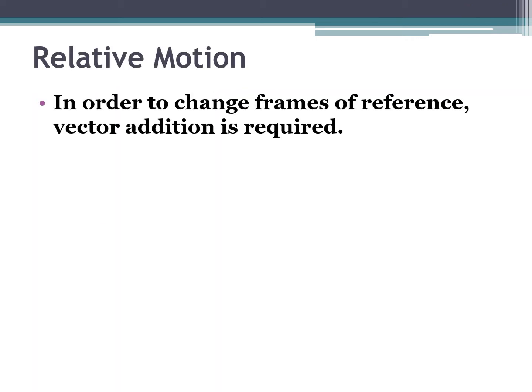When talking about relative motion, in order to change frames of reference — from a motion relative to one perspective to a motion relative to another — you have to do vector addition. We've talked about vector addition already, so we'll use it to change frames of reference for relative motion.